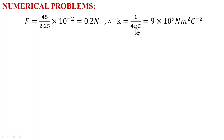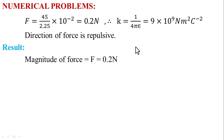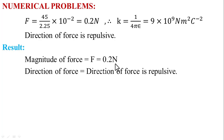Here K = 1 / (4πε₀) = 9 × 10⁹ N·m²/C². We can now find the direction of force. Since both charges are positive, the direction of force is repulsive. The magnitude of force F = 0.2 Newton and the direction of force is repulsive (force of repulsion).